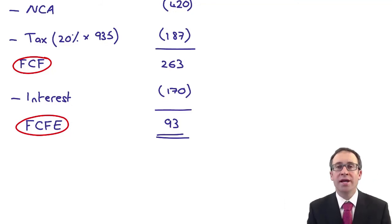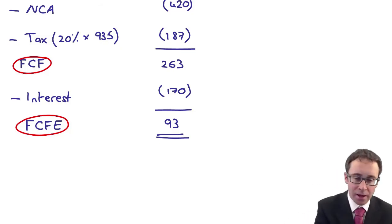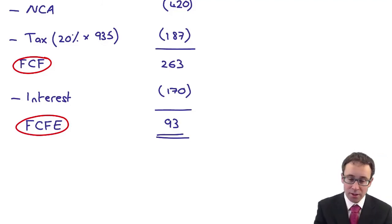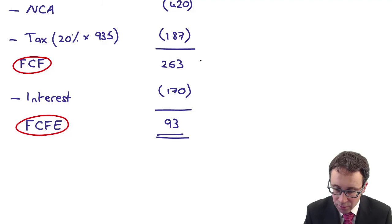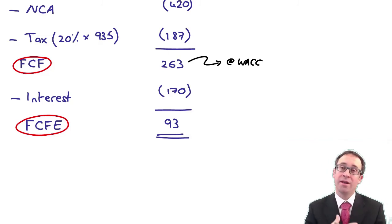This can make a great objective test type question - calculate the free cash flow, calculate the free cash flow to equity. Just be careful, I know it's not part of the question, but your free cash flows you discount at the weighted average cost of capital, and that will give you the value of the business. To work out the value of equity, you then deduct the value of the debt.